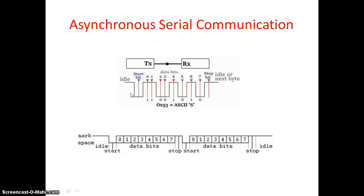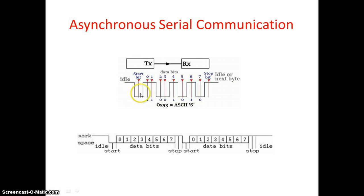Since this is asynchronous communication, you don't know at what time it is going to start — that is the key challenge. In synchronous communication you know the timing and can synchronize your clock, but in asynchronous you need to detect the falling edge. Using Timer A's capture compare channel, which can detect a falling edge transition, if I put the timer in capture mode I can wait to detect that falling edge. Once detected, an interrupt is generated.